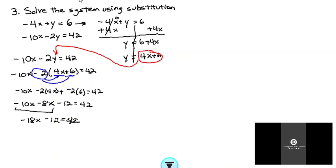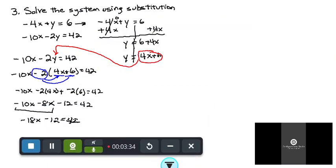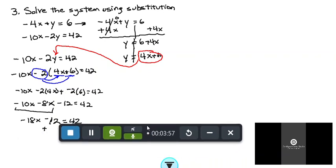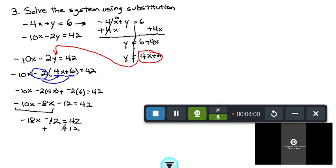Let's try that again. So negative 18x minus 12 equals 42. Add 12 to both sides of the equation. And I wind up getting negative 18x equals 54.